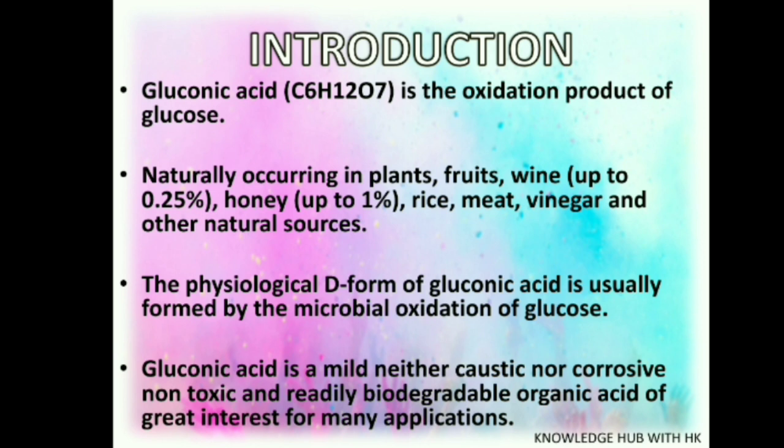This reaction is facilitated by the enzyme oxidase if fungi is used, such as Aspergillus niger, and the enzyme glucose dehydrogenase if bacteria is used, such as Gluconobacter. It occurs naturally in plants, fruits, wines, rice, honey, meat, vinegar, and other natural sources.